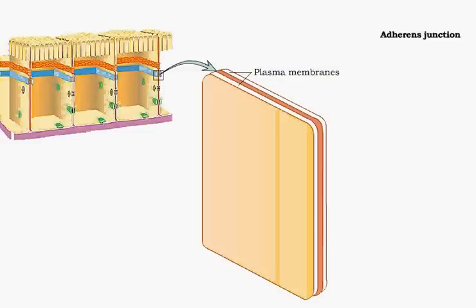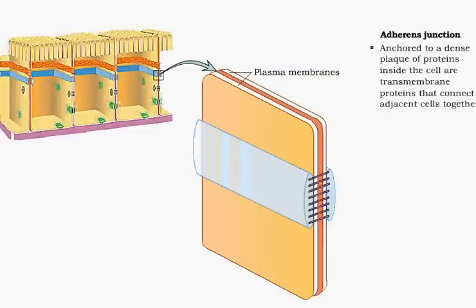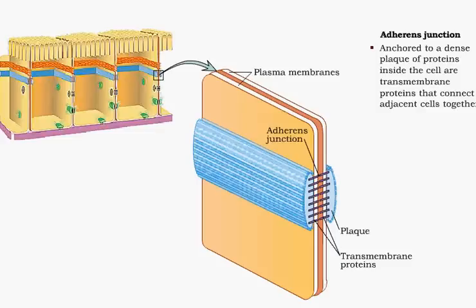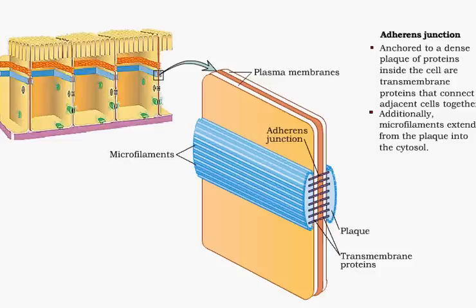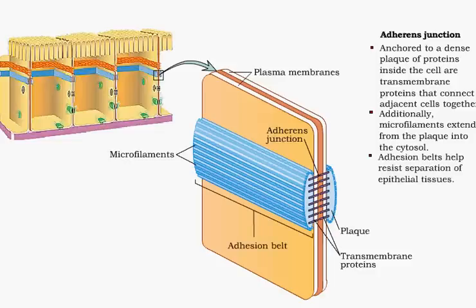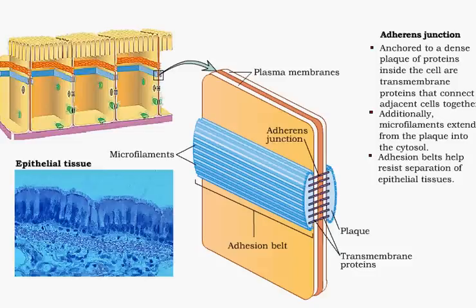Adherence junctions are created when transmembrane proteins, anchored to a dense plaque of proteins inside the cell, connect the adjacent cell membranes together. Additionally, microfilaments extend from the plaque into the cytosol of each cell. The dense adhesion belts help resist separation of epithelial tissues.